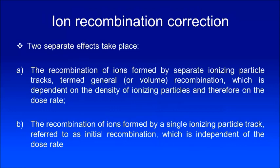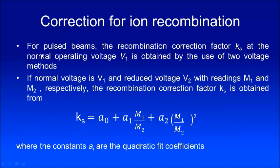Therefore we apply a correction for ion recombination. For pulsed beams, the recombination correction factor K_s at the nominal operating voltage V1 is obtained by the two-voltage method. V1 is the voltage at which your chamber was originally calibrated — say +300 V, giving meter reading M1. Then reduce the voltage to V2 — say 200 V — and get meter reading M2. Use the equation with quadratic fit coefficients A0, A1, A2 (provided in TRS-398 for various V1/V2 ratios) to get K_s. This equation applies to pulsed beams.